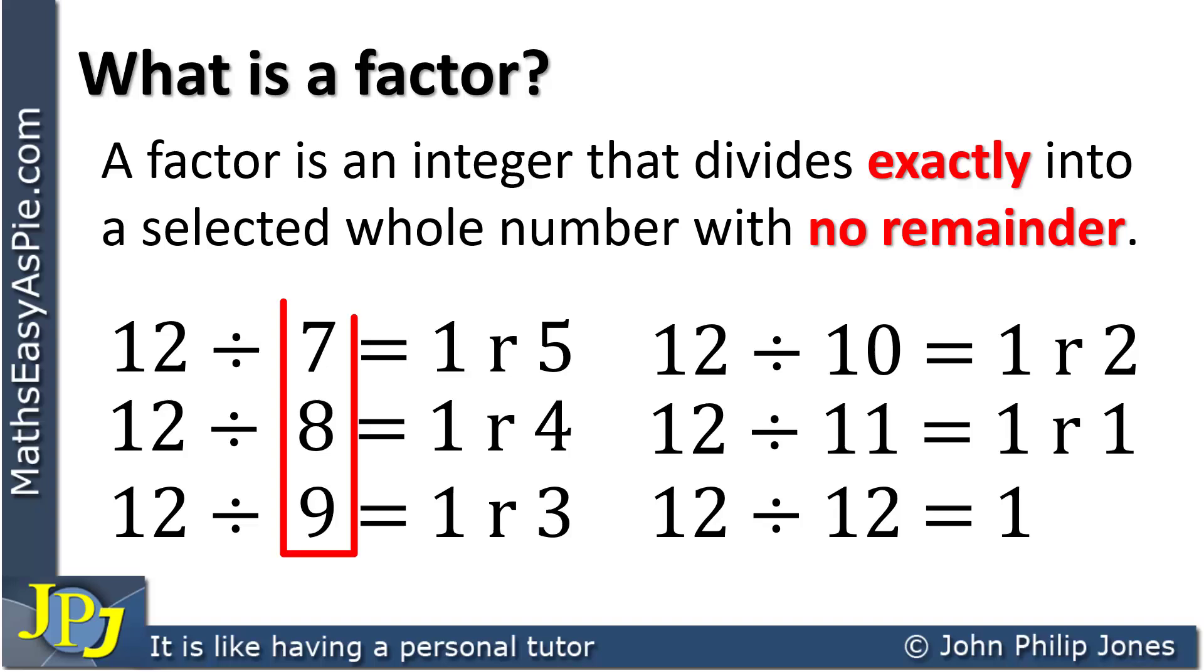You can see here I'm dividing by 7, 8, 9 and in all cases they go once and in all cases there's a remainder. So 7, 8, 9 are not factors of 12.